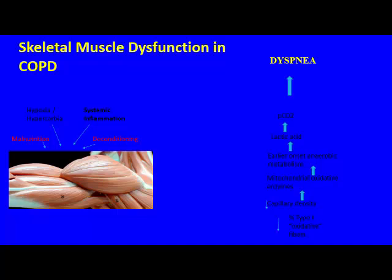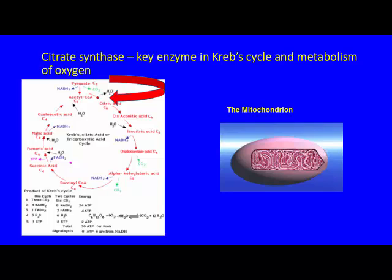Factors influencing skeletal muscle dysfunction in COPD include malnutrition, hypoxia, hypercapnia, systemic inflammation, and deconditioning. At the cellular level, there is a shift from type 1 muscle fibers to type 2. Type 1 fibers support oxidative processes that increase ATP and energy; switching to type 2 creates a more glycolytic, less energy-efficient process. This leads to decreased capillary density, compromised mitochondrial oxidative enzyme function, earlier onset of anaerobic metabolism, rising lactic acid and PCO2 — all making patients feel very dyspneic.